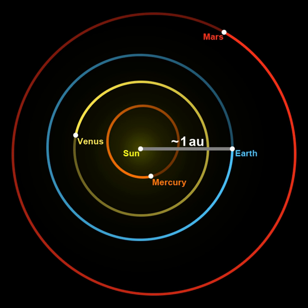NASA's Jet Propulsion Laboratory Horizons system provides one of several ephemeris computation services. In 1976, in order to establish a yet more precise measure for the astronomical unit, the IAU formally adopted a new definition. Although directly based on the then best available observational measurements, the definition was recast in terms of the best mathematical derivations from celestial mechanics and planetary ephemerides. It stated that the astronomical unit of length is that length for which the Gaussian gravitational constant takes the value 0.01720209895 when the units of measurement are the astronomical units of length, mass and time.